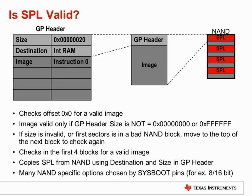Assuming that a NAND boot is selected as the primary boot mode, the ROM bootloader will attempt to load the SPL from a zero offset of the NAND flash. A property of all NAND flash devices is that they are expected to have bit errors over time. For this reason, error code detection and correction is required when using NAND flash to detect these bit errors and, if possible, correct them. If the bit errors within a block become too numerous for correction, this block is marked bad and no longer used.